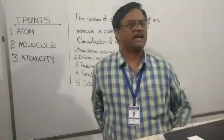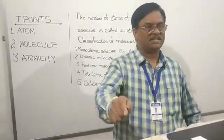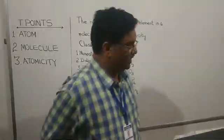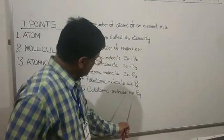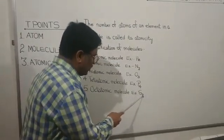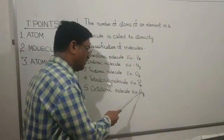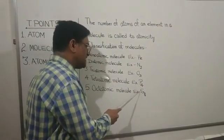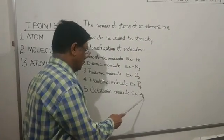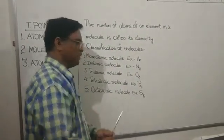Next comes the octoatomic molecule, in which eight atoms are present in one molecule. Example: molecule of sulfur S8. Sulfur is indicated by the symbol S, and the subscript eight indicates eight atoms of sulfur. Nothing is written before S, meaning it is one molecule. One molecule of sulfur consists of eight atoms. Therefore this molecule is an octoatomic molecule.